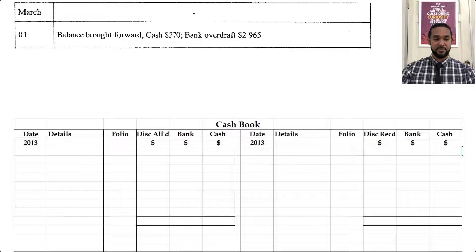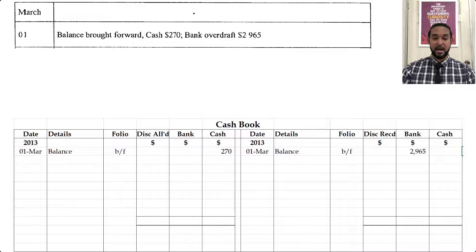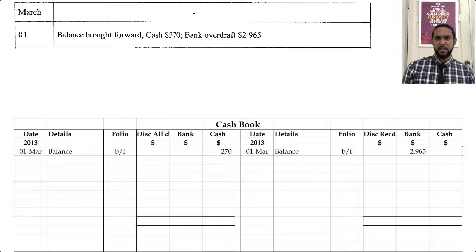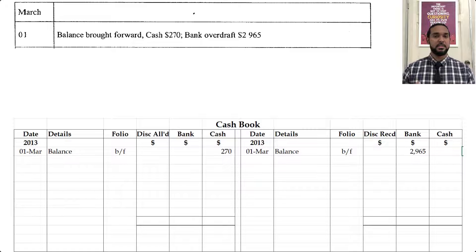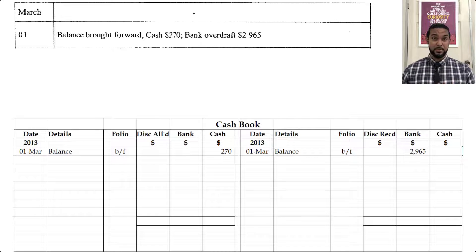So in the cash book, on the debit side you're going to see the balance brought forward for cash of 270. On the credit side you're going to see the balance for bank of 2,965. Now some of you might say, how come you have the bank and the cash columns switched? Shouldn't the cash be to the left of the bank column? Normally yes, honestly it doesn't make a difference, and the question paper actually gave it in this format so I wanted to preserve the format so it would correspond to what you have instead of having to switch sides.